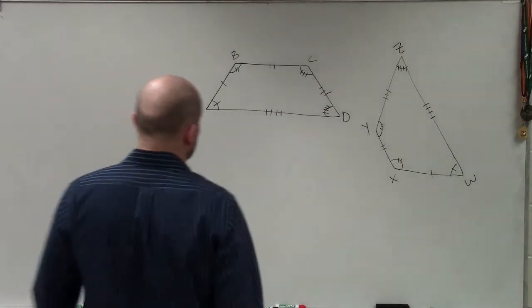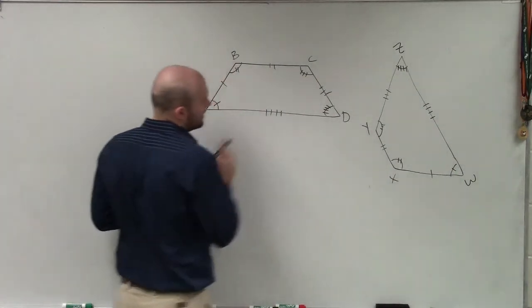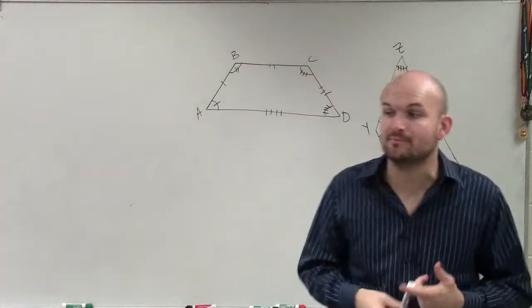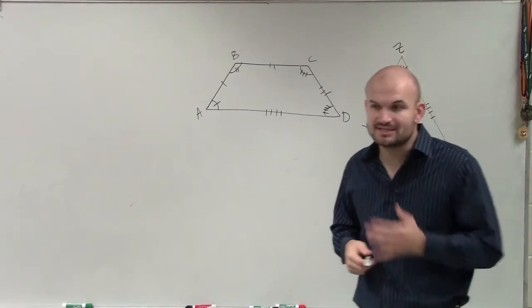So let's go and take a look at these two polygons, all right? And what we're trying to do is I'm just asking you to go ahead and label the corresponding parts, meaning the corresponding angles, as well as the corresponding sides.